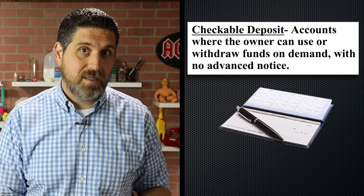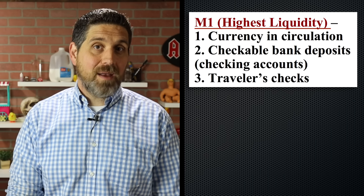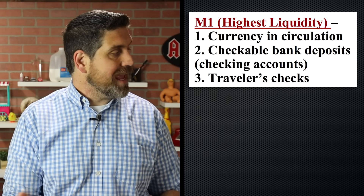Money doesn't even need to be a physical, tangible object. In fact, most of our money is just ones and zeros in computers at banks. When economists talk about money, they're talking about cash and currency in circulation and also checkable deposits — all the money in checking accounts. You can go buy a pizza with cash, but you can also write a check, and that's a medium of exchange. M1 money is currency in circulation, checkable deposits (checking accounts), and traveler's checks.